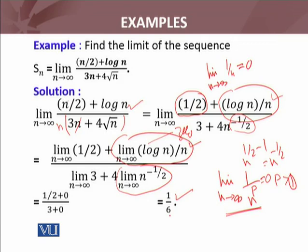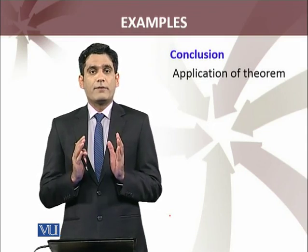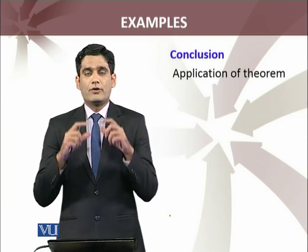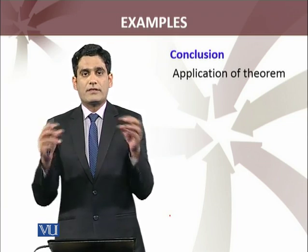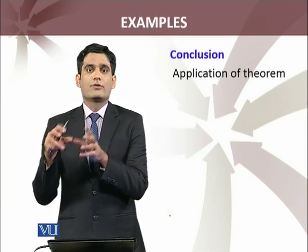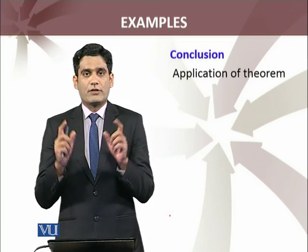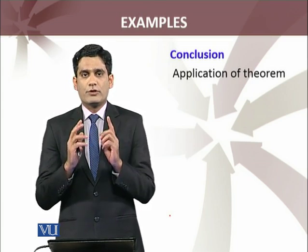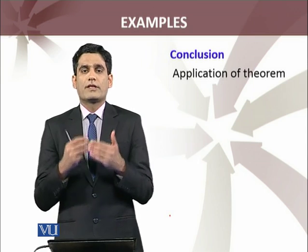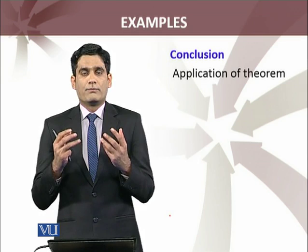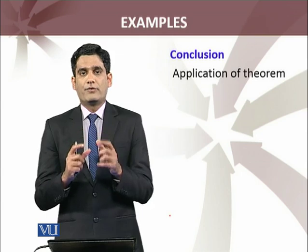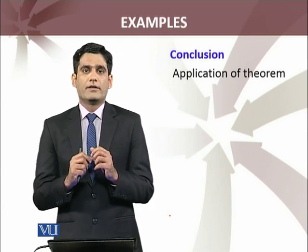By this method we have calculated the limit of an apparently complicated sequence whose nth term involved a numerator and denominator, with terms in the numerator being a sum of two sequences, one of which involved the logarithm function. By using the algebra of limits, we discussed two examples, and in both we used the previous theorem about limits that we had proved. You can see that by using that theorem we are able to find limits of some complicated sequences.